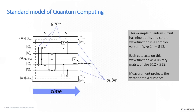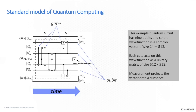Time goes from left to right in this circuit diagram. You initialize the state of the qubits — mathematically, you initialize that big vector of 512 numbers to a particular starting vector. Then as time goes from left to right, you encounter these gates, which are vertical lines that hit maybe two or three qubits. Each gate applies a transformation that acts in parallel over all the possible states of the other qubits. Each gate can be represented as a big matrix that multiplies that vector.